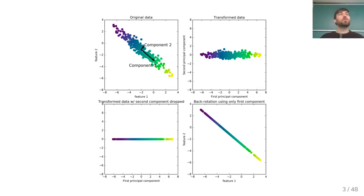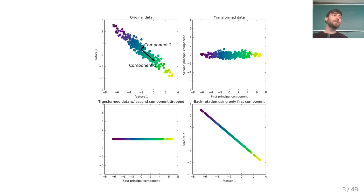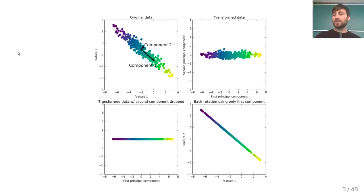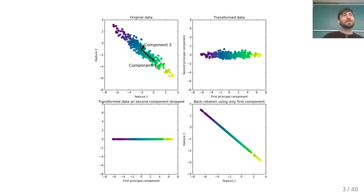What principal component analysis does is it iteratively finds the direction of largest variance within the data. Assuming we have centered the data, this direction explains most of the variance — this would be the first component. Then iteratively it removes the projection on this component and finds the next component.